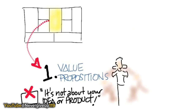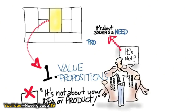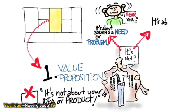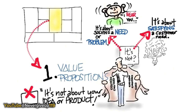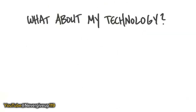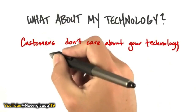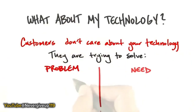The value proposition says it's not about your idea or product — it's about solving a problem or a need for a customer. What pain are you solving, what gain are you creating, and more importantly, who are your customers? Value proposition is a fancy word for what product or service are you building, where you'd normally list all your features, speeds, feeds, and benefits. But you're really going to be asking a different question: it's not all about your technology. Customers really don't care about your technology.